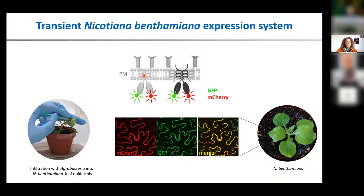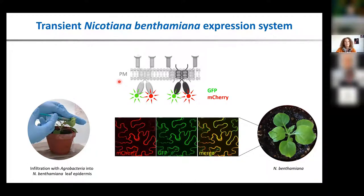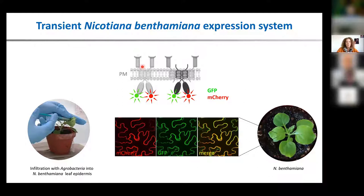These receptors are transmembrane-spanning receptors, and we label them with different fluorescent proteins — GFP and mCherry, for example. We can do this either stably in Arabidopsis thaliana, or more quickly using a transient expression system. This also gives us the chance to test where to put the label — N-terminal, C-terminal, or sometimes in the middle of the protein — and check if it still localizes correctly.